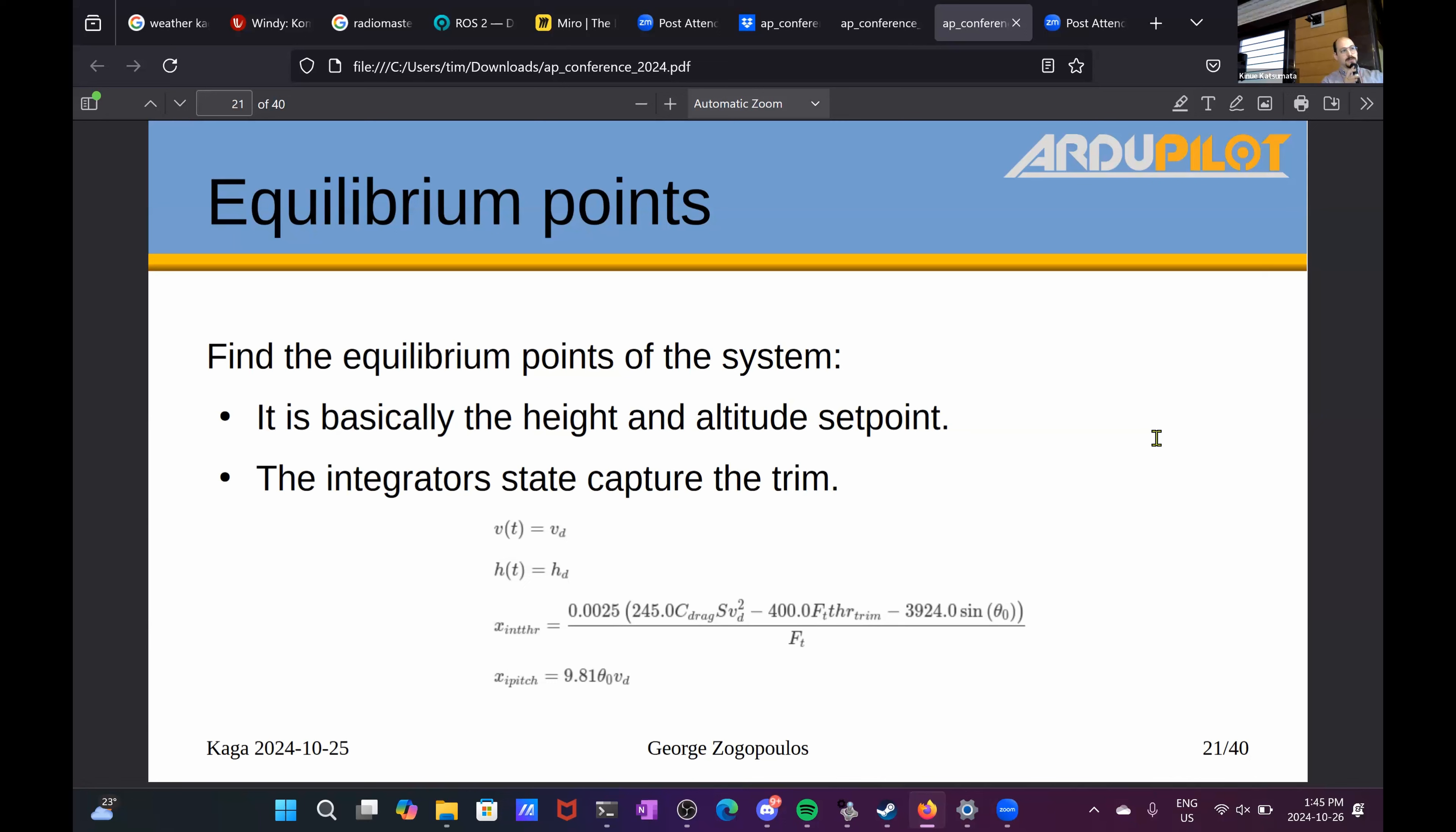Some of those points can be stable, some can be unstable. In this case, we'll see that it is a stable point. And indeed, when we try to solve for zero derivatives, we get the velocity and altitude set points, which is a good thing. It means that TECS can stabilize that system on the desired set points.